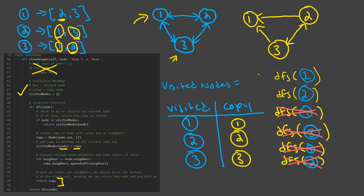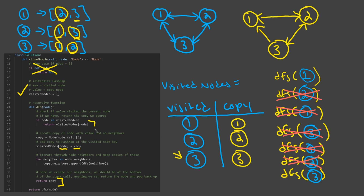Back in the original DFS call for node 1, the returned copy of node 2 is appended, so node 1 is now connected to node 2. We then go to the next neighbor of node 1, which is 3. We call DFS for node 3 — it's already in the HashMap, so we return the copy. Node 1 is now connected to node 3 as well. The DFS call finishes, and we return our final completed cloned graph.